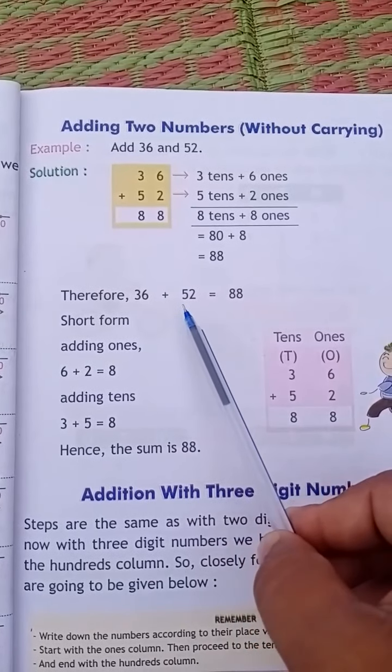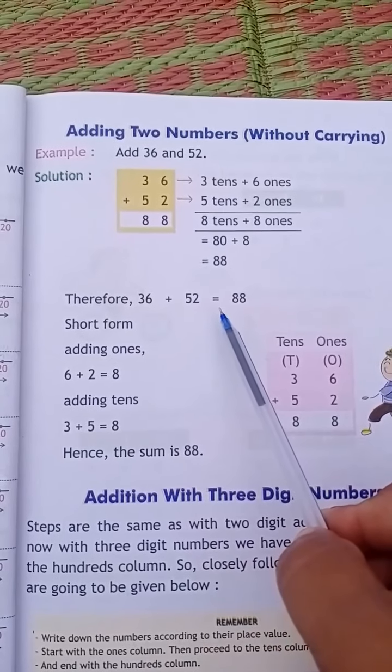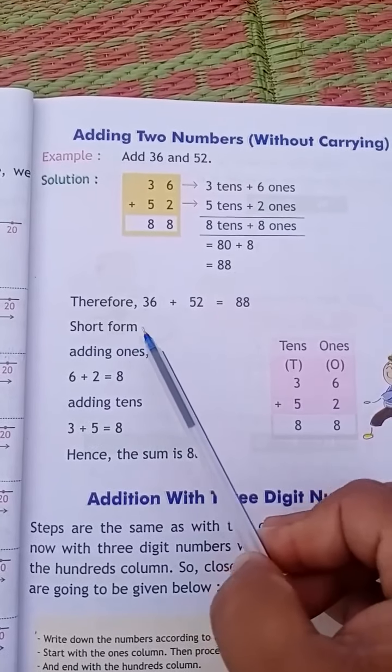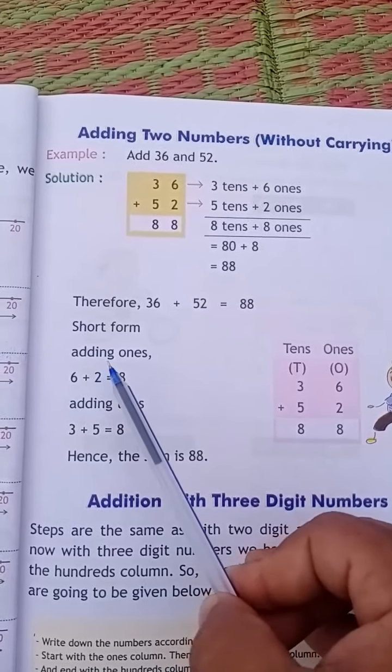You will also use the column method. Short form: adding ones.